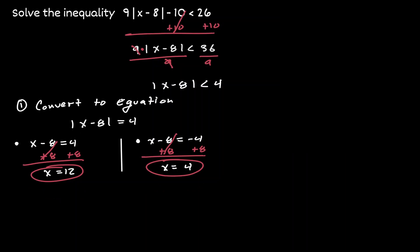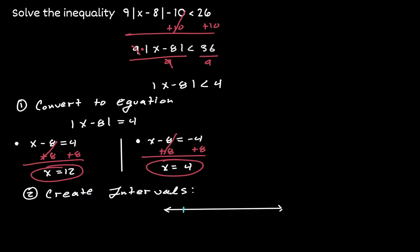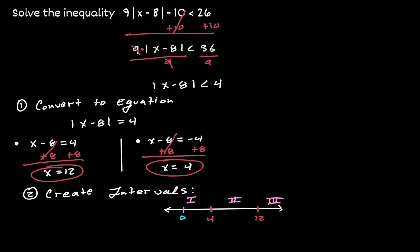Our second step is to create intervals on the number line using the values we got — 4 and 12. Let's draw our number line with 0, then place the value of 4 and the value of 12. Notice that the number line gets cut into three different intervals: x values less than 4 (interval 1), x values between 4 and 12 (interval 2), and x values greater than 12 (interval 3).